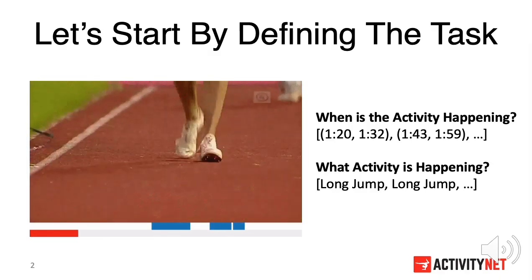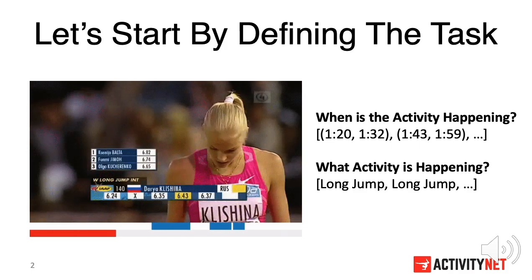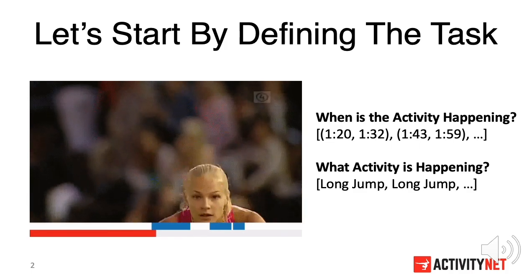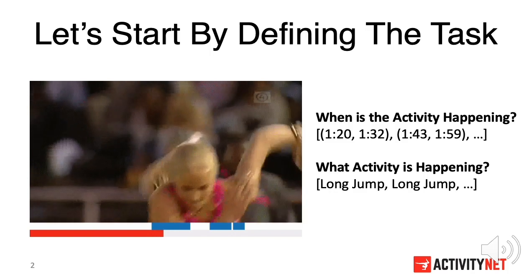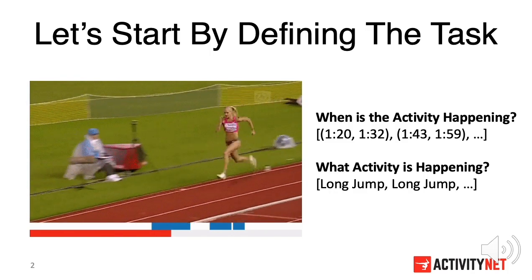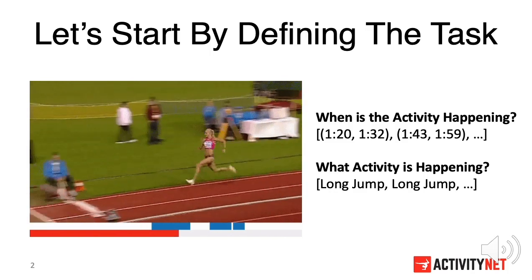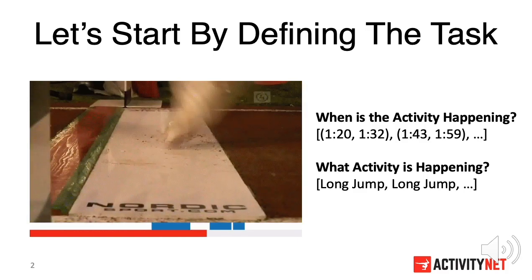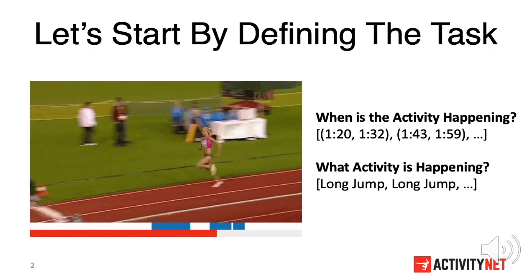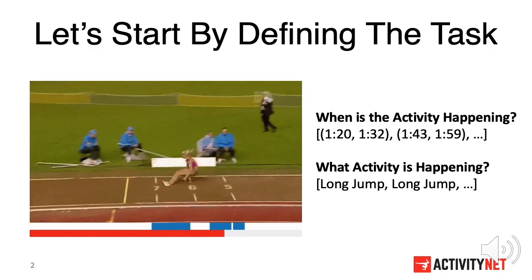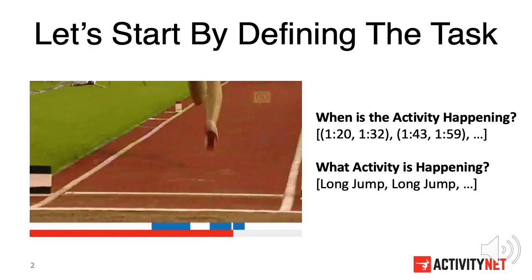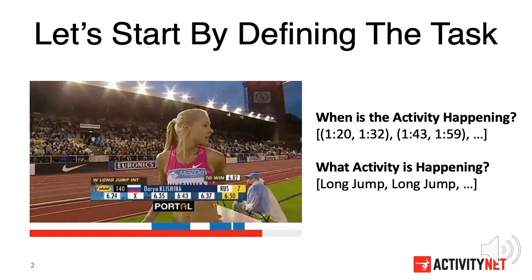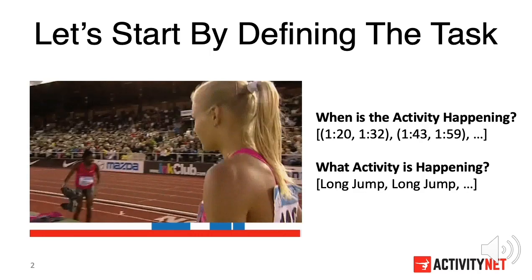In the Temporal Action Localization Task, we care about two questions: what activity is happening in the video, and when does the activity happen? As a human, it is simple to answer these questions for this video. The activity is long jump, and it happens from 120 to 132, from 143 to 159, and so on.